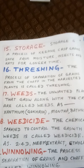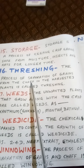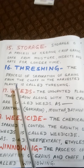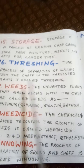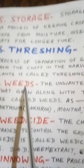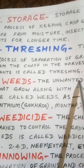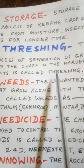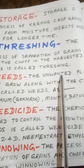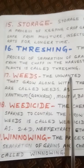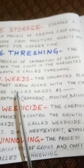Next keyword: Threshing. The process of separation of grains from the chaff in the harvested plants is called threshing.